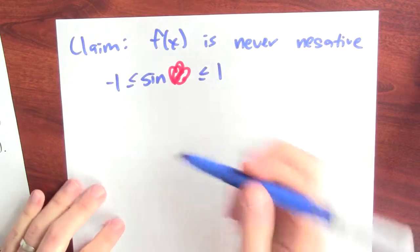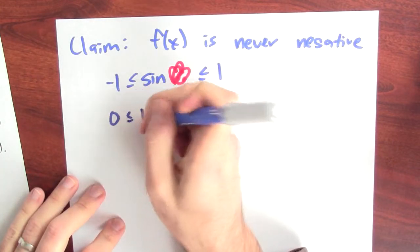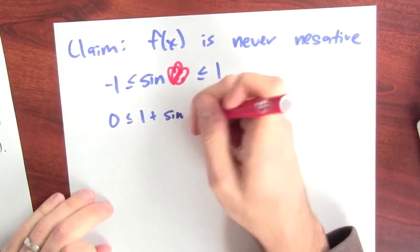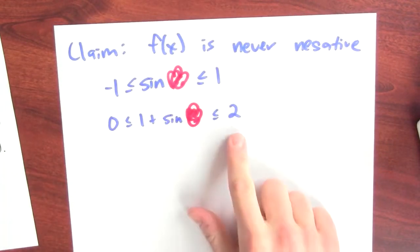Now, if I add 1 to this, 1 plus sine of absolutely anything at all is between 0 and 2.